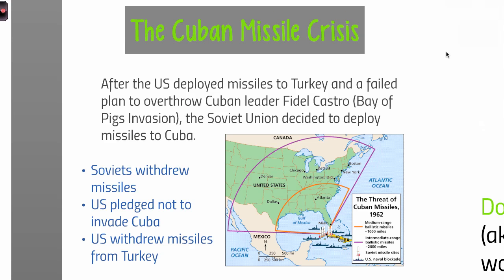One of the big issues in the 1960s is going to be the Cuban Missile Crisis. Just a little background — Cuba at this time, the early 1960s, is a communist country. They are allies with the Soviet Union. USSR is the acronym for Soviet Union.